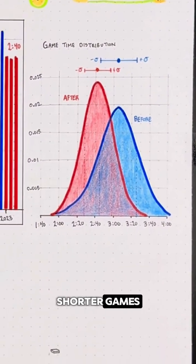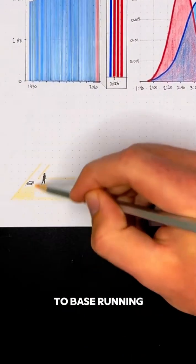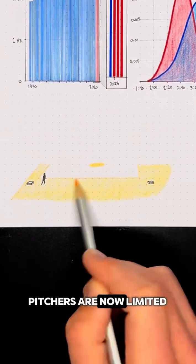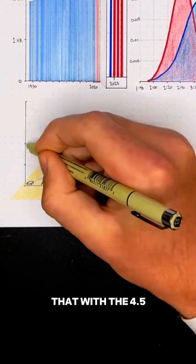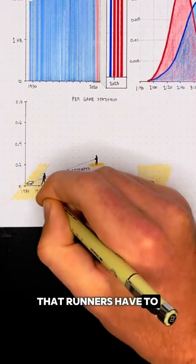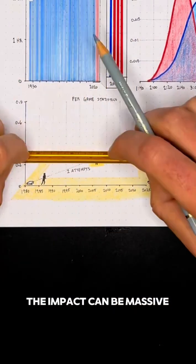So now we have shorter games, but there's also more action, especially when it comes to base running. Alongside the pitch clock, pitchers are now limited to just two pickoff attempts per at bat, and when you combine that with the 4.5 fewer inches that runners have to cover between bases, the impact can be massive.